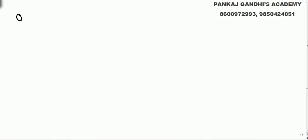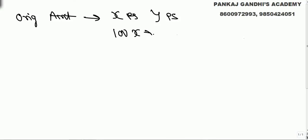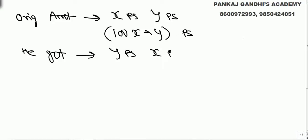A person had a check of original amount x rupees and y paise. Since 1 rupee equals 100 paise, the original check amount was 100x + y paise. But the cashier interchanged the values and gave him y rupees and x paise, that is 100y + x paise.